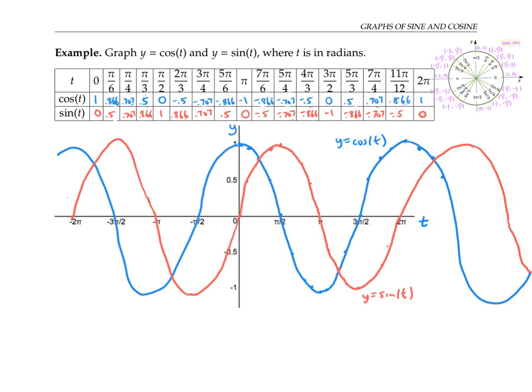Going forward, I'll usually write the functions as y equals cosine of x and y equals sine of x. When I write it this way, notice that x now refers to an angle, while y refers to a value of cosine or sine.